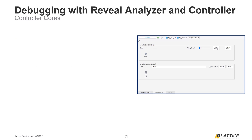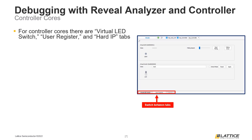The second type of debug core we will discuss are Controller cores. As seen in the figure on the screen, there are three Controller tabs in Reveal Analyzer, each corresponding to a tab configured in Reveal Inserter. In order to use one of these tabs, the same tab in Inserter must also have been enabled.